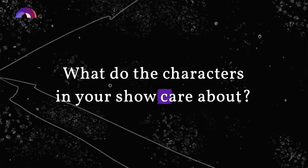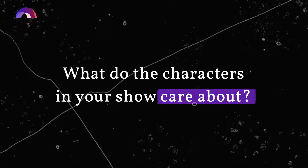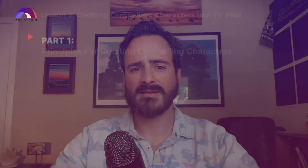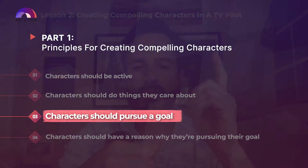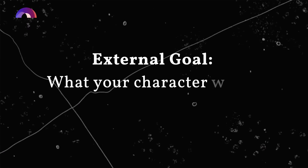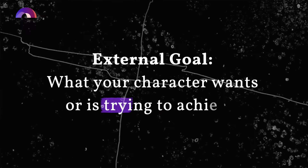So think about your show. What do your characters care about? Are they doing things related to that? One way to think about what your characters care about is to think about what they want — and they should want something. The thing in their life that they want or are trying to achieve is called their external goal. If they have an external goal, they have something that is driving them. It forces them to be active and make the kinds of decisions that will tell us who they are.